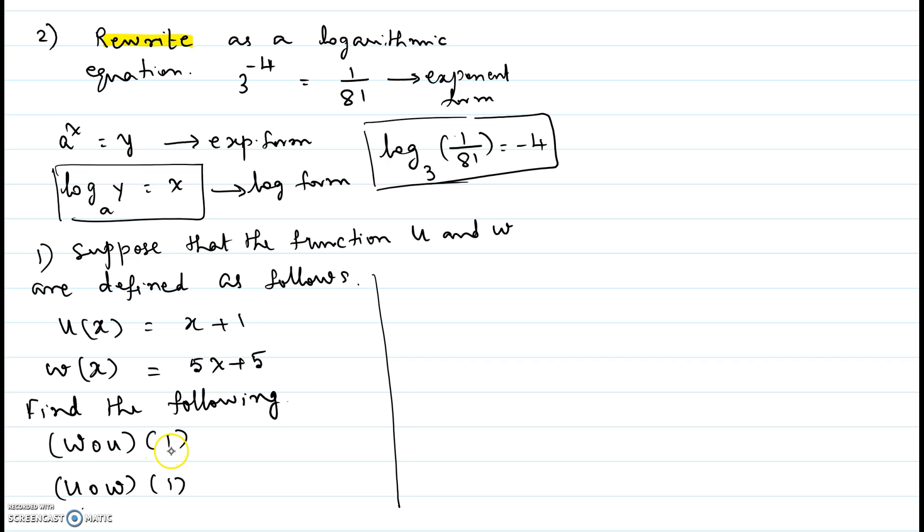Find the following: w composite u equal to 1, u composite w equal to 1.